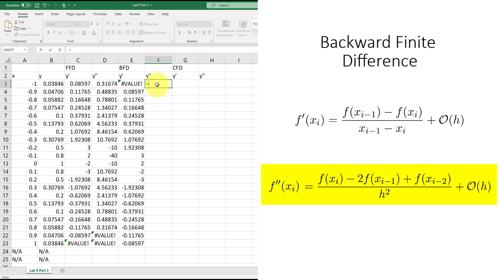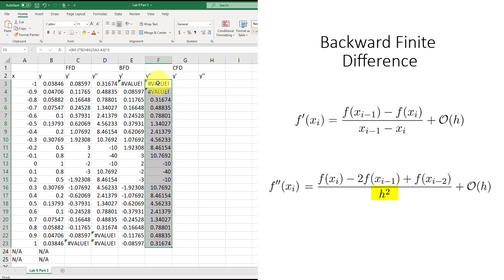Then for the second derivative, which is equal to f(x_i) minus 2 times f(x_i-1) plus f(x_i-2) divided by h squared, which is A2 minus A3 squared. Once again, click and drag. In this case, the first two derivatives cannot be found since it depends on two previous cells which do not exist.